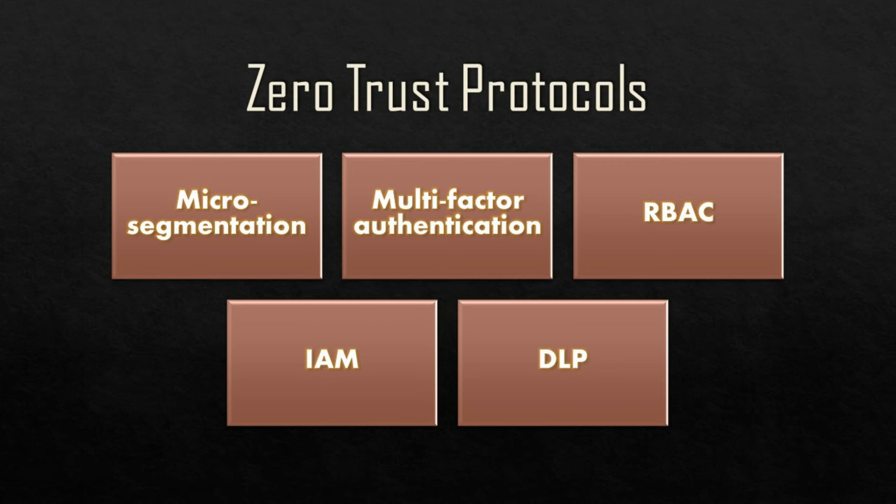DLP, or data loss prevention, is something the zero-trust model can incorporate. Data loss prevention tracks specific characteristics of data, such as the length of a string or numbers, to identify things like whether it's a social security number or credit card number. If data like this attempts to leave the organization, it will trigger an alert and can either encrypt the data or prevent the unauthorized exfiltration of data from leaving the organization.